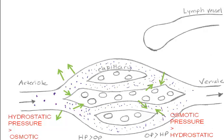The blood becomes dilute once again. About 90% of the fluid that was pushed out due to hydrostatic pressure at the arterial end is brought back into the blood system at the venule end through osmotic pressure.